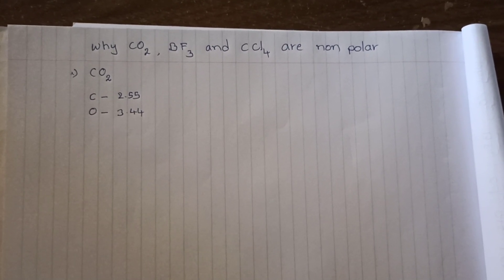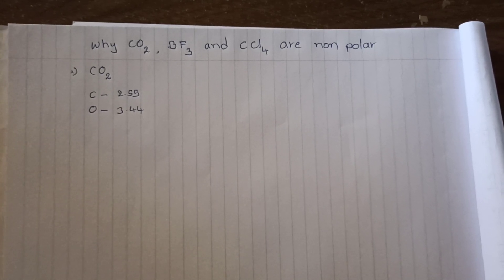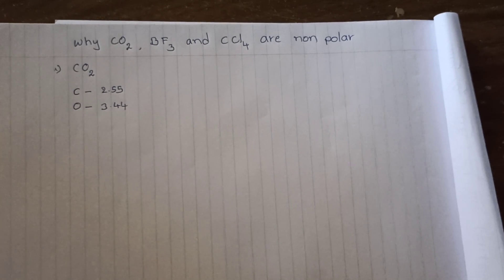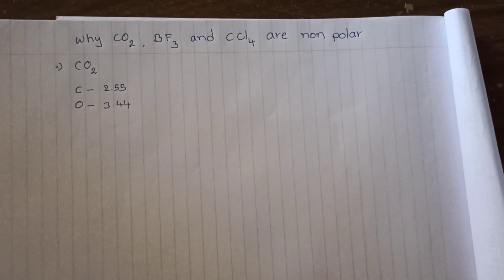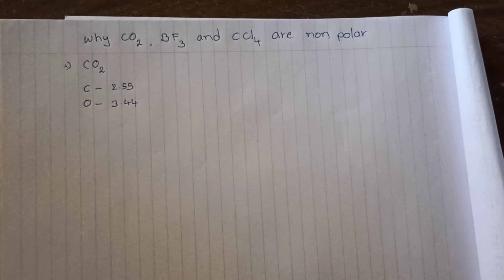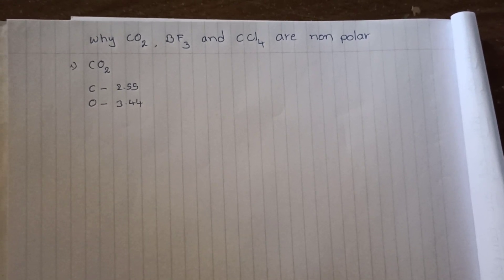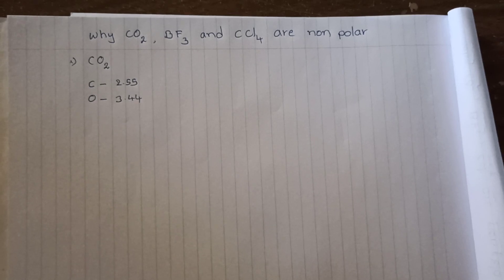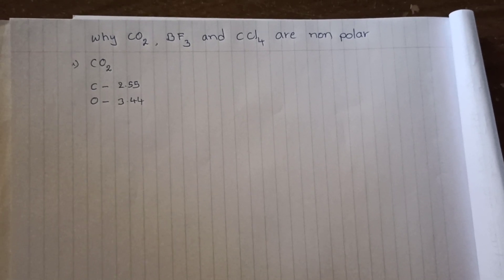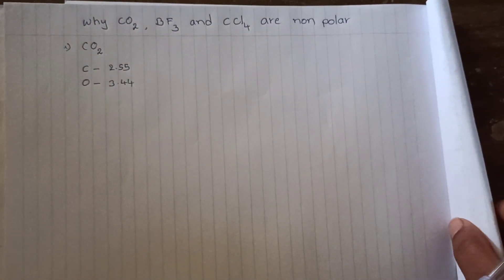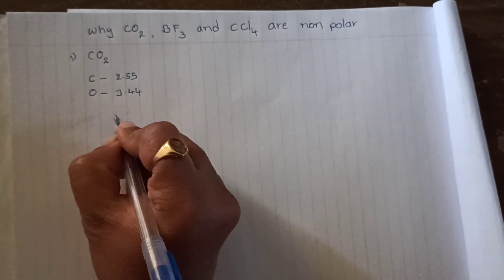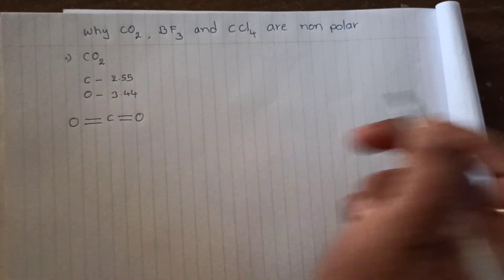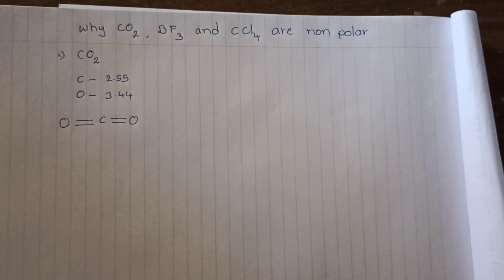But in contrast, it acts as a non-polar molecule. There are two things you have to consider to decide whether a molecule is polar or non-polar: first, the electronegativity difference between the atoms, and in addition to that, you have to look at its molecular structure. The structure of carbon dioxide is linear — it has a linear geometry.